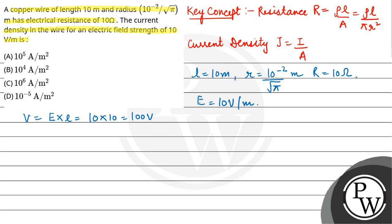We have voltage and resistance, so current will be I is equal to V upon R, that is 100 upon 10, so current is equal to 10 ampere. Now we need cross sectional area, pi r square.